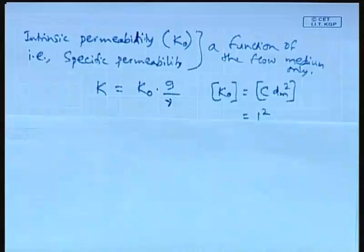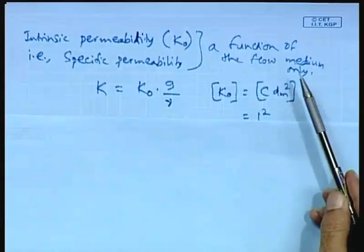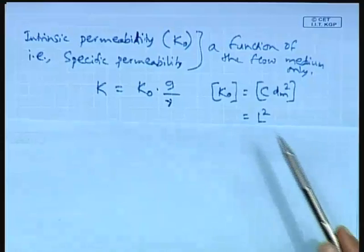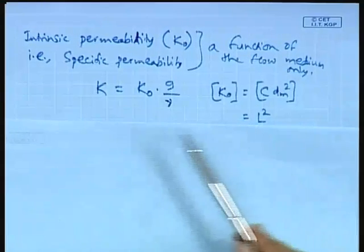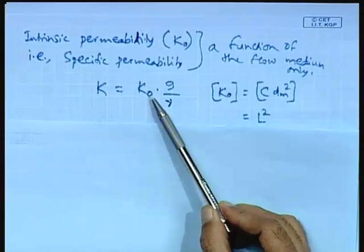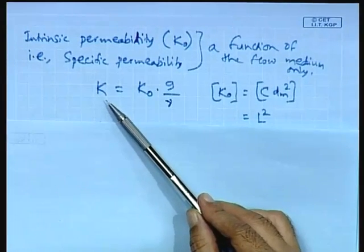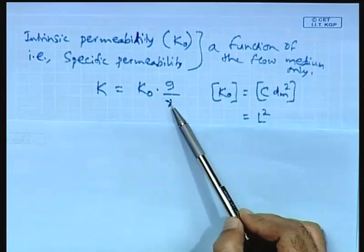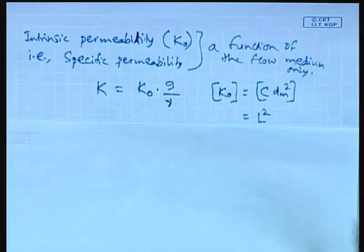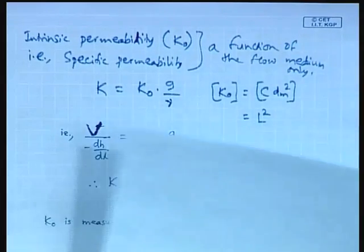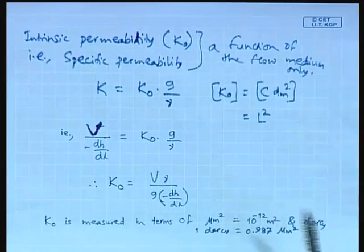Welcome to lecture 8 on permeability and its determination. In the previous lecture we discussed intrinsic permeability, which is essentially a function of flow medium only and has dimensions of square of length. Intrinsic permeability is denoted by k₀ and is linked with hydraulic conductivity k by the formula k = k₀ × g / ν, where ν is the kinematic viscosity.